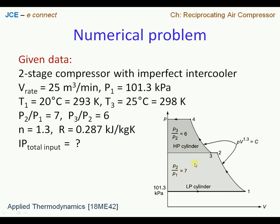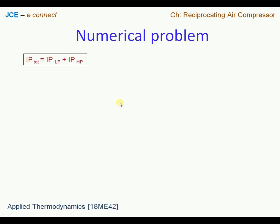From the PV diagram for this problem, at stage 1 the pressure ratio is 7, at stage 2 the pressure ratio is 6, and the compression process follows the polytropic law PV^1.3 = constant. The governing equation is: total power input = input power for the low pressure cylinder + input power for the high pressure cylinder, expressing pressure and volumes in terms of mRT.